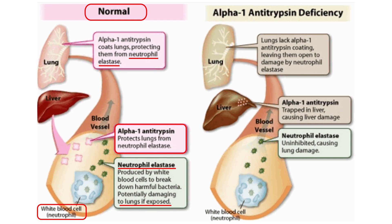In the deficiency scenario, the lung no longer has alpha-1 antitrypsin to protect it. The enzyme accumulates and is trapped in the liver, causing liver damage. Meanwhile, in the lung, neutrophil elastase is free to damage the lung tissue without any alpha-1 antitrypsin to stop it.